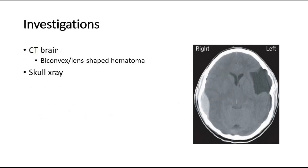For investigations, a CT brain is required. In epidural hematoma, the typical CT scan finding is a biconvex shape — also called a lens-shaped hematoma — as shown in the image. You can see this over the right cerebral hemisphere. This lens-shaped hematoma is a classic finding for epidural hematoma.